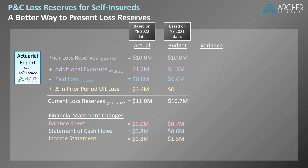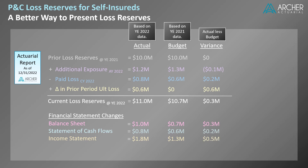The variance between the actual amounts and the budgeted amounts will be very important to our self-insured client. We calculate each item by taking the actual amount less the budgeted amount. Of particular interest is the difference in the actual versus budgeted change to the income statement. In our example, we see that the change in loss reserves results in a $500,000 hit to income. This is the amount that determines whether the loss reserve estimate we provide is considered good news or bad news. I recommend, as actuaries, we bring more attention to this amount rather than the traditional focus on loss reserve balances.